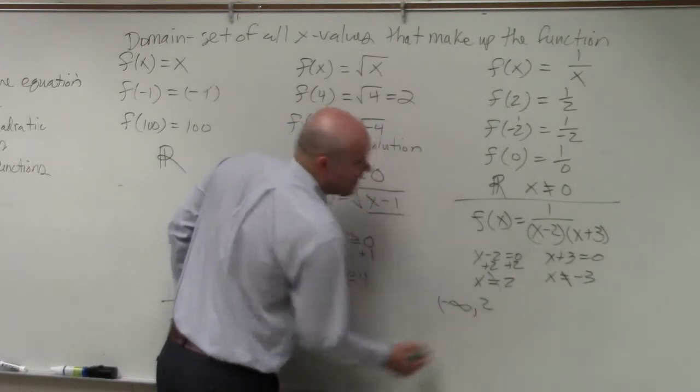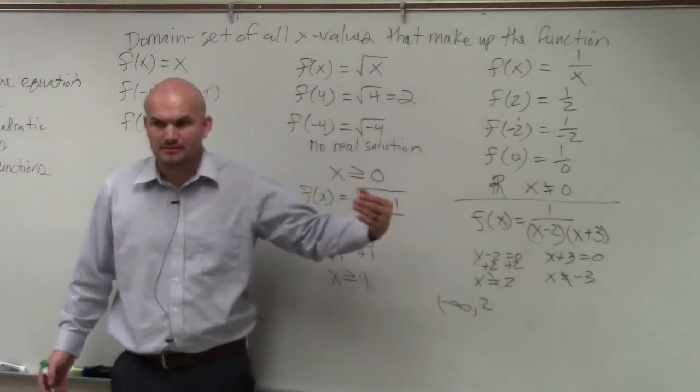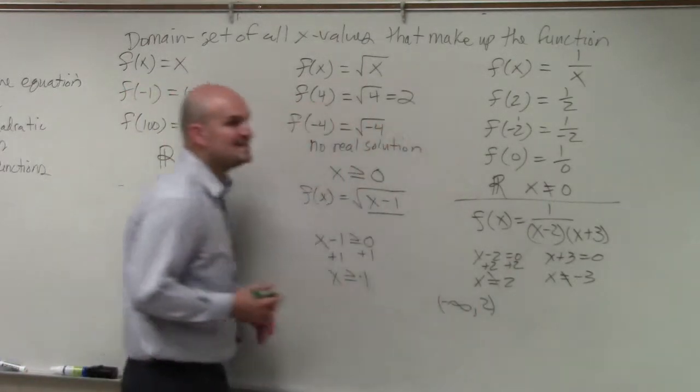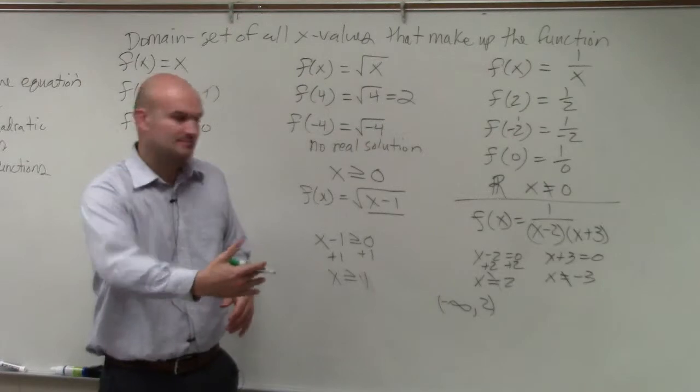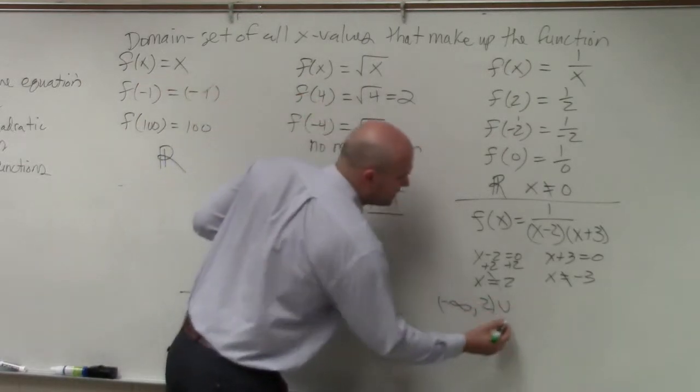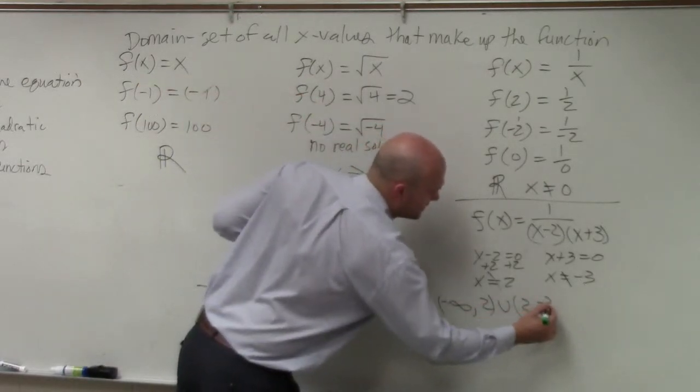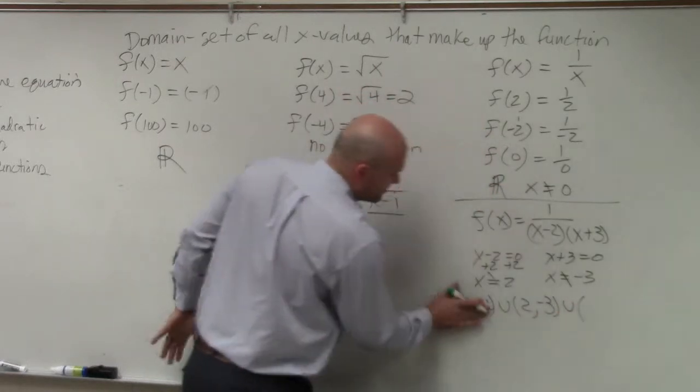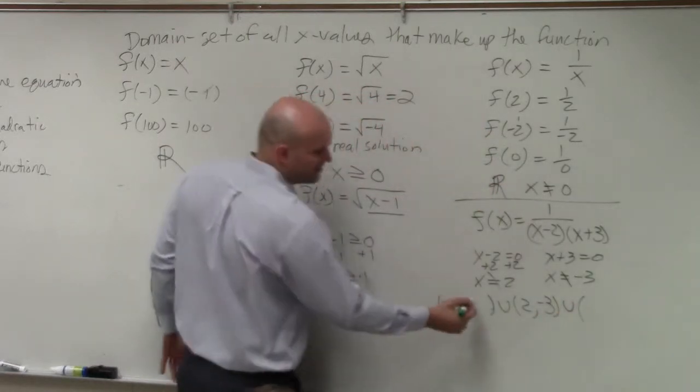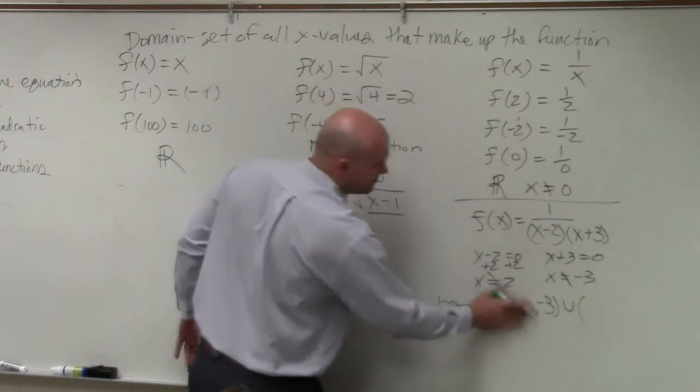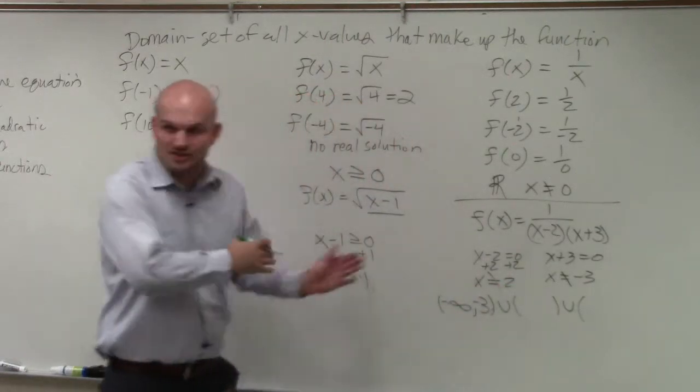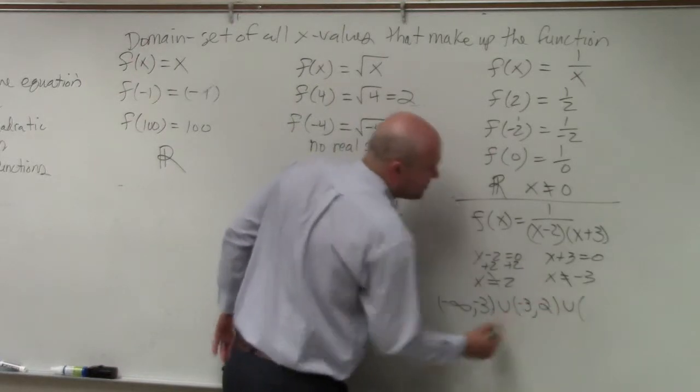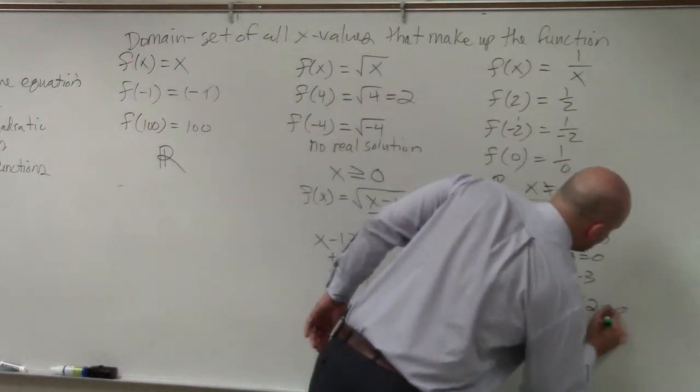So to write this in interval notation, we'll say all real numbers. That means from negative infinity to the number 2. However, is 2 a part of the domain? No, because 2 would make it 0, which is undefined. So therefore, it's not included. So it's going to be a parentheses. Then union, we're going to go from 2 to negative 3. Union, oops, I'm sorry. You always go from the smallest value. Should go to negative 3. My bad. We're going from smallest numbers to positive numbers. So negative 3, union 2, and then 2 to infinity.